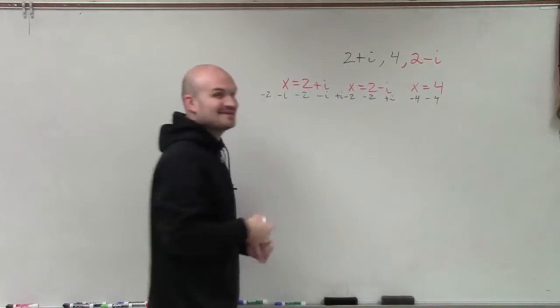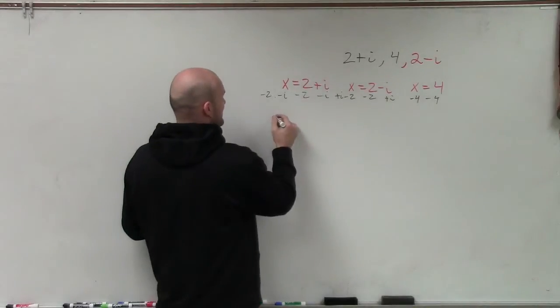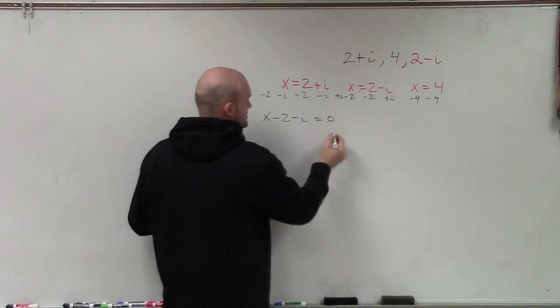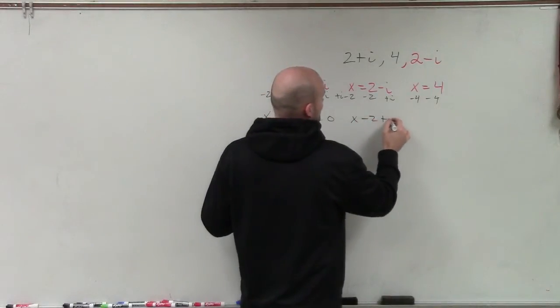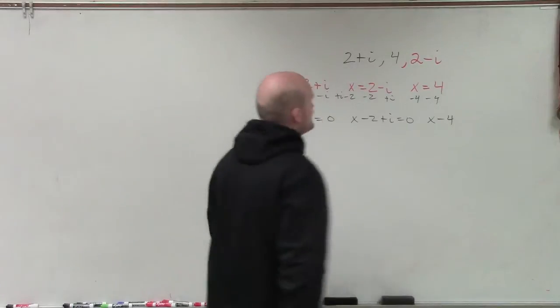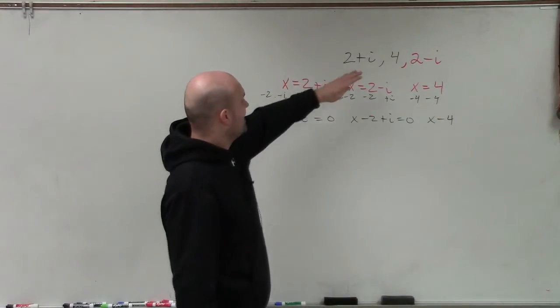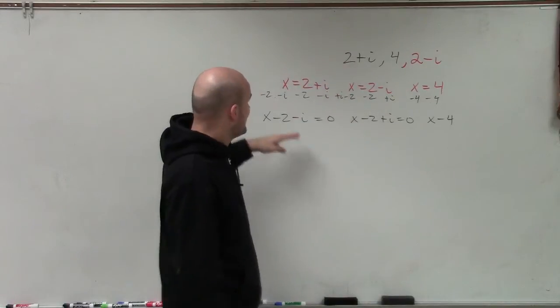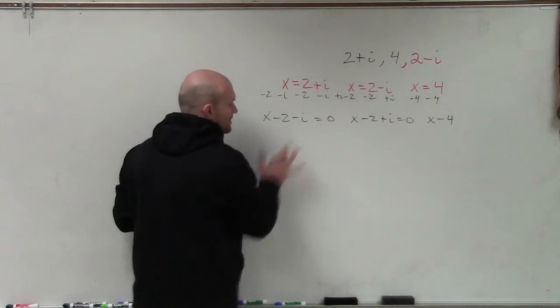We kind of like those now because, oh wow, they're a lot simpler. So therefore, in this case, I have x minus 2 minus i equals 0, x minus 2 plus i equals 0, and x minus 4. A lot of students will just make the mistake and subtract one of those.